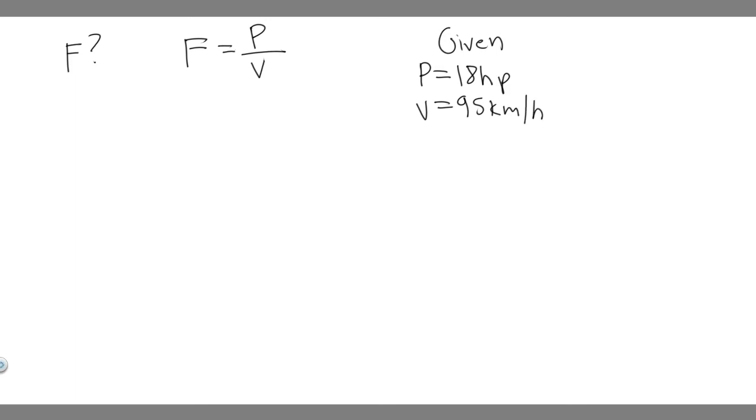When we do this, you need to make sure your power is in watts and your velocity is in meters per second. So we have to convert these units. Let's start with the power. To convert 18 horsepower into watts, you need to know that there's 746 watts for every one horsepower.